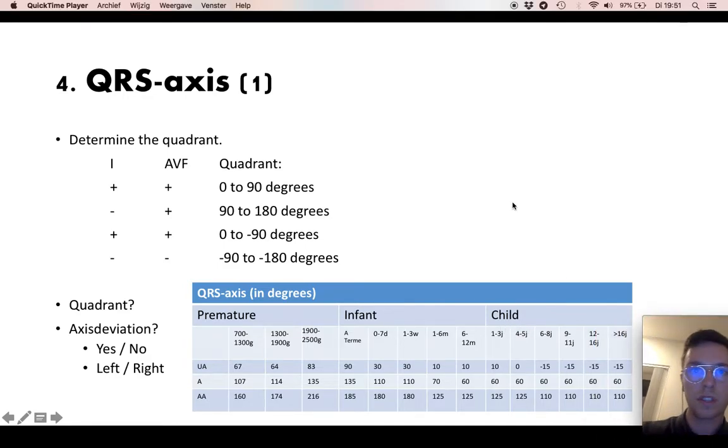For example if you are looking to a child of one to three years the average axis will be 60 degrees, under average will be 10 and above 125. So 60 degrees would be positive in lead I and positive in AVF and then it's completely normal.